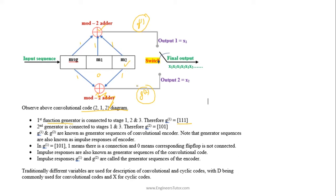These generator sequences are also known as impulse responses of the encoder. In the generator sequences, one means there is a connection and zero means the corresponding flip-flop is not connected to the function generator, where function generator means modulo-2 adder.